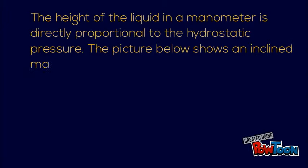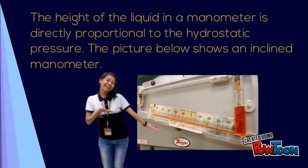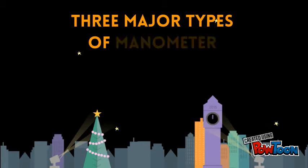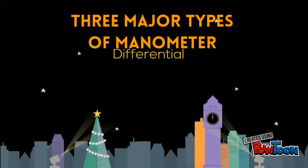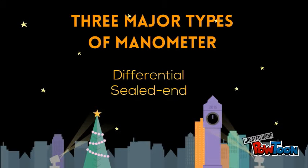The picture below shows an inclined manometer. There are three major types of manometer: differential, sealed end, and open end.